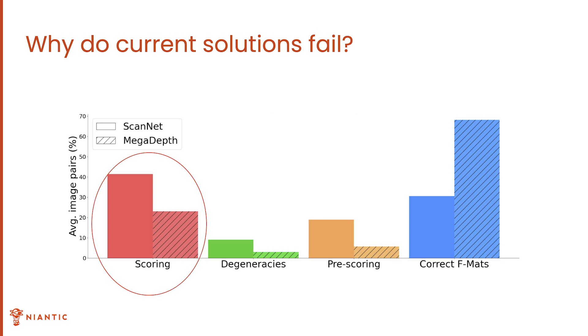However, most often, RANSAC fails when the inlier counting heuristic chooses the wrong hypothesis and discards the correct hypothesis. But why is an incorrect hypothesis selected?